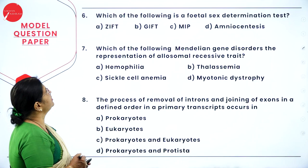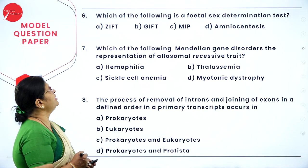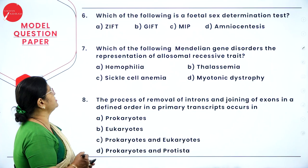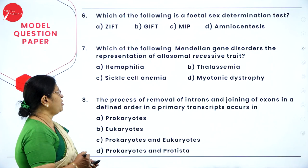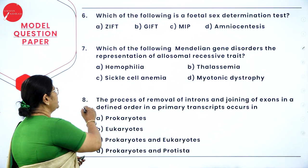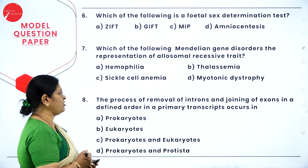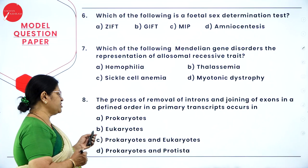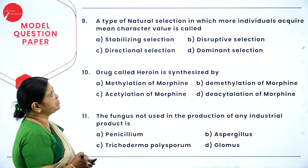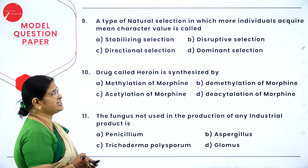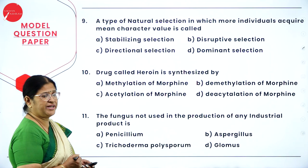Question 6: which of the following is a fetal sex determination test? Option A: ZIFT; B: GIFT; C: MIP; D: amniocentesis. Question 7: in which Mendelian gene disorder is an allosomal recessive trait seen? Options: A: haemophilia; B: thalassaemia; C: sickle cell anaemia; D: myotonic dystrophy. Question 8: removal of introns and joining of exons in a defined order in a primary transcript occurs in — prokaryotes, eukaryotes, both, or prokaryotes and protista. Question 9: a natural selection in which more individuals acquire mean character value is called — A: stabilizing; B: disruptive; C: directional; D: dominant selection.